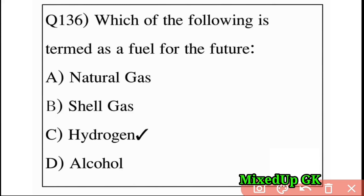Next question: which is considered fuel for the future? Option A: natural gas, Option B: cell gas, Option C: hydrogen, Option D: alcohol. The answer is Option C: hydrogen. Hydrogen is termed as fuel for the future.